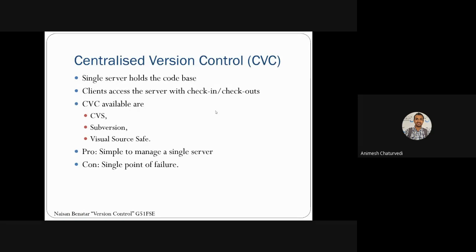Central version control systems (CVCS) examples include CVS, Subversion, and Visual Source Safe. The advantage of CVCS is that it is simple to manage with a single server.